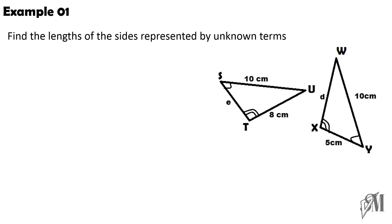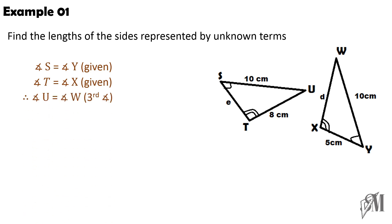Now let us see how to work out some questions on equiangular triangles. In the first example, we need to find the lengths of sides represented by unknown terms. Two triangles STU and WXY are given. Two sides of each triangle are mentioned and there are two unknown sides E and D. From the given data, angle S equals angle Y and angle T equals angle X, so angle U equals angle W as the third angles. Therefore triangle STU is equiangular to triangle WXY.